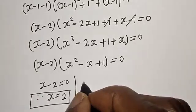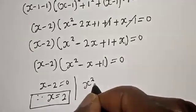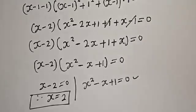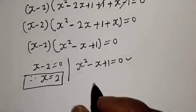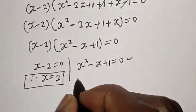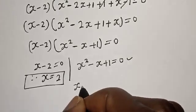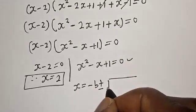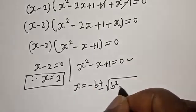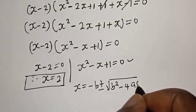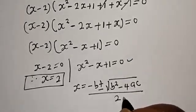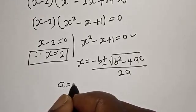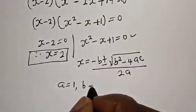The second case is s squared minus s plus 1 equals 0. This is a quadratic equation which can be solved using the quadratic formula: s equals minus b plus or minus square root of b squared minus 4ac, over 2a. Here a equals 1, b equals minus 1, and c equals 1.